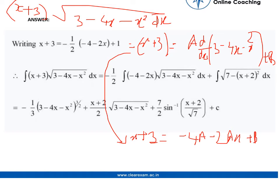So, in solving this equation, we get a is equals to minus half and b is equals to 3. Therefore, x plus 3 can be written as minus half into minus 4 minus 2x plus 1.